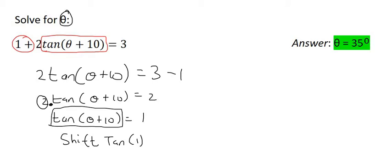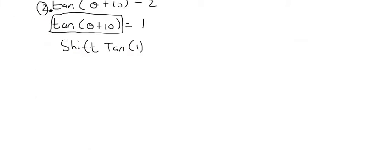And that's going to give you 45. So what you then do is you take whatever's in the bracket and you say theta plus 10 equals to 45. Then you just get theta alone by saying 45 minus 10. And that's going to give you 35 degrees.